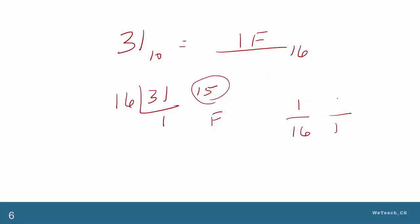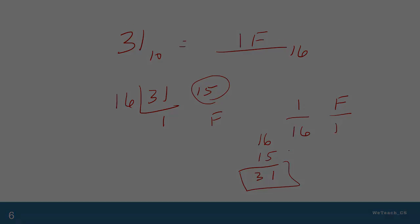We check it with the place values: 1 value of 16, F values of 1, is 16 plus 15, which adds back to 31 — which checks our answer.